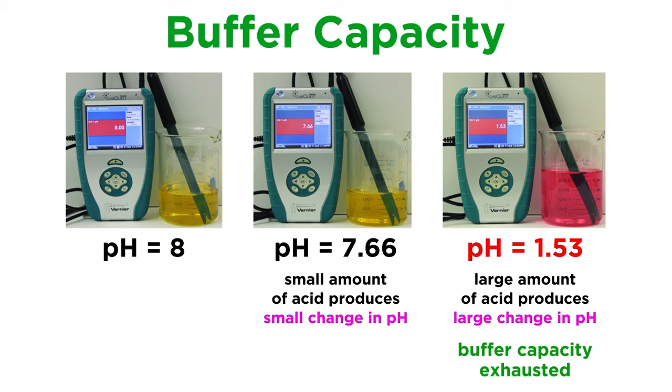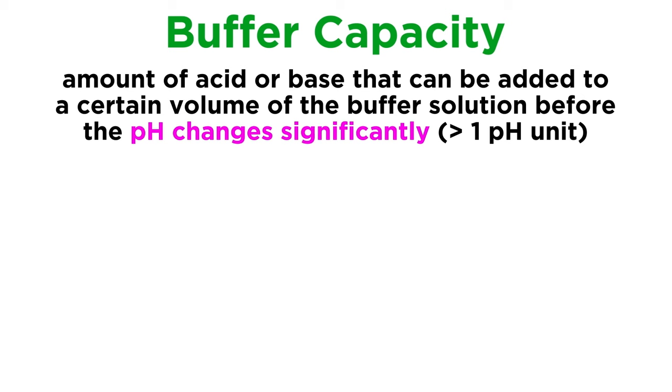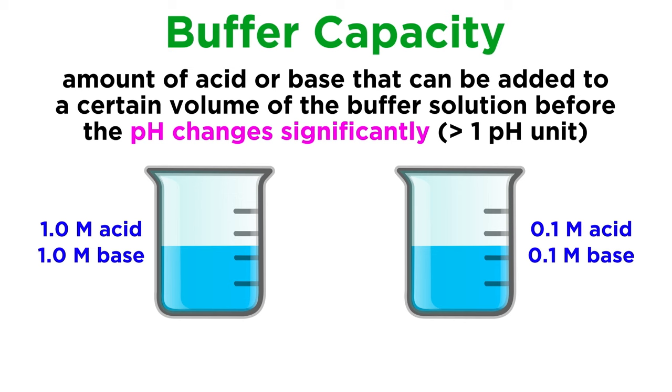We will define the buffer capacity of a solution as being the amount of acid or base that can be added to a certain volume of the buffer solution before the pH changes significantly, usually by at least one pH unit. Buffer capacity will certainly depend on the amount of acid and base that are in solution, which is why a buffer solution that is one molar in acetic acid and one molar in sodium acetate will have a much greater buffer capacity than a solution that is 0.1 molar in each substance. These solutions will have the same pH because they involve precisely the same equilibrium, but the more acetic acid molecules and acetate ions there are, the more molecules of strong acid or base that can be neutralized, and hence a greater resistance to change in pH as acid or base is continually added.